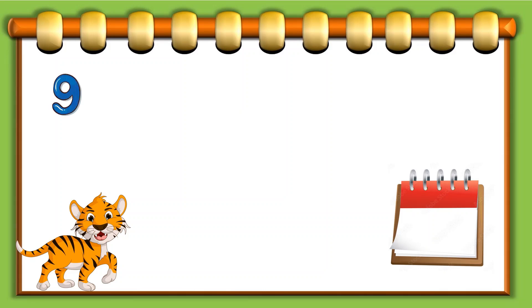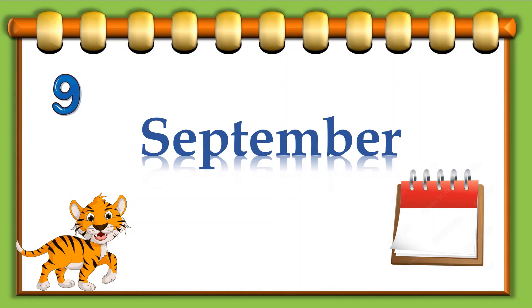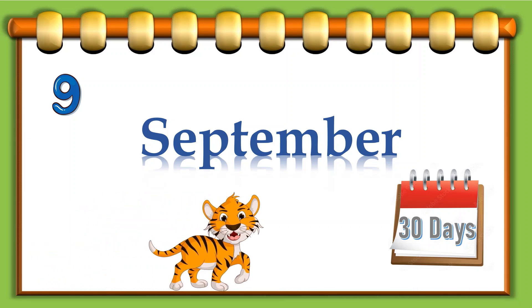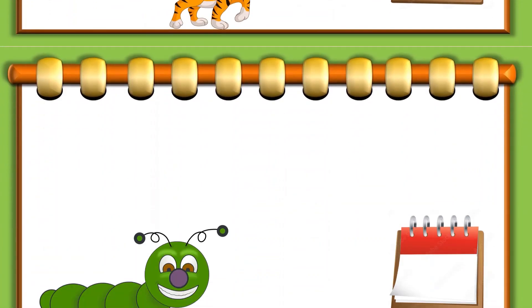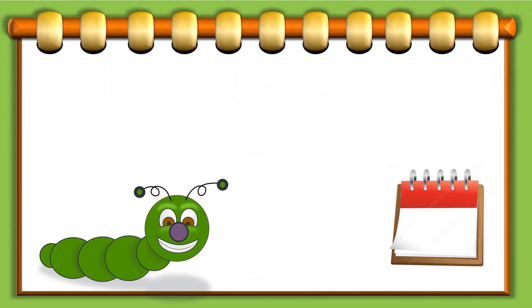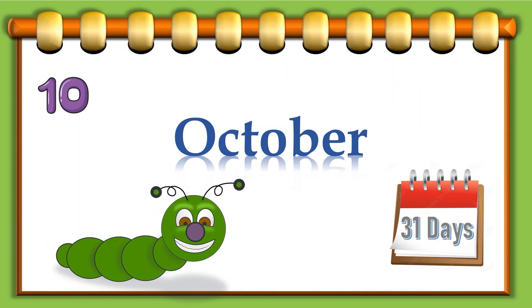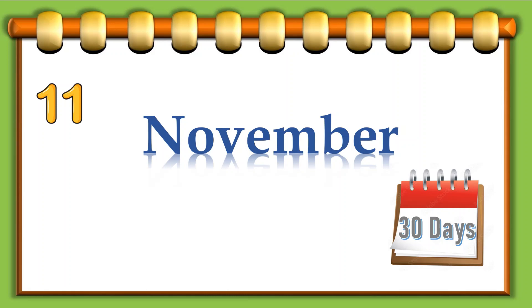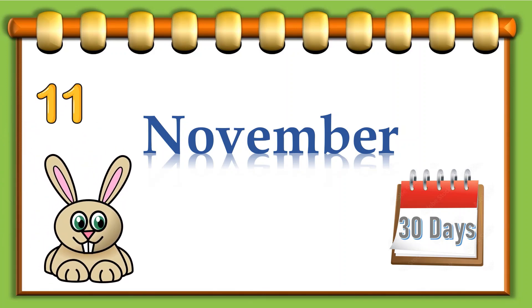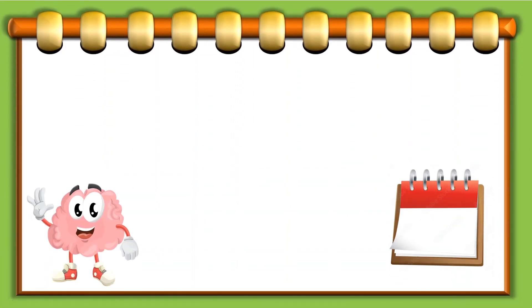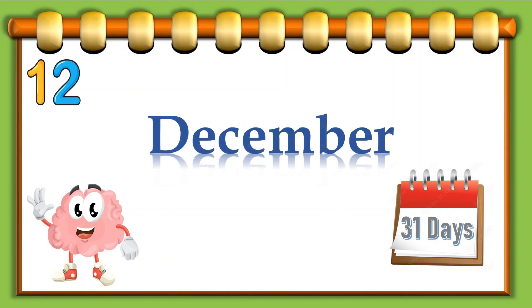Nine: September, thirty days. Ten: October, thirty-one days. Eleven: November, thirty days. December, thirty-one days.